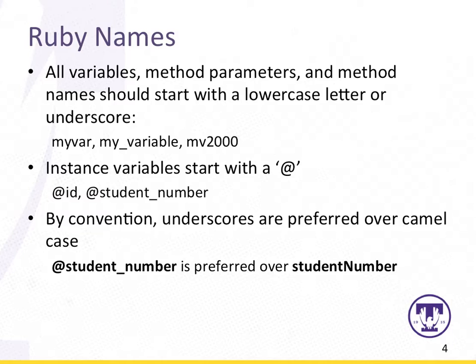When we create classes in Ruby, the instance variables — the variables that are persistent in an object — start with an at sign. So @id or @student_number, for instance, would be instance variables. You can also have class variables, which are singletons maintained across all instances of a class. You would use a double at sign for that, which is certainly useful especially if you're employing something like the singleton pattern.